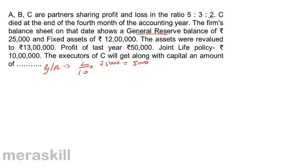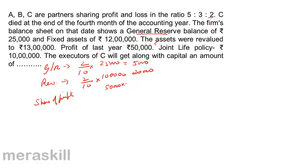Next, fixed assets of 12 lakh were revalued to 13 lakh. That means there is an increase — the revalued increase in assets is 1 lakh. So C's share is 2/10 of 1 lakh, which is 20,000. Next, profit of last year was 50,000. What is the share of profit? The profit is 50,000 for the full year; therefore for 4 months it is 4/12. C's share is 2/10. This comes to 3,333.